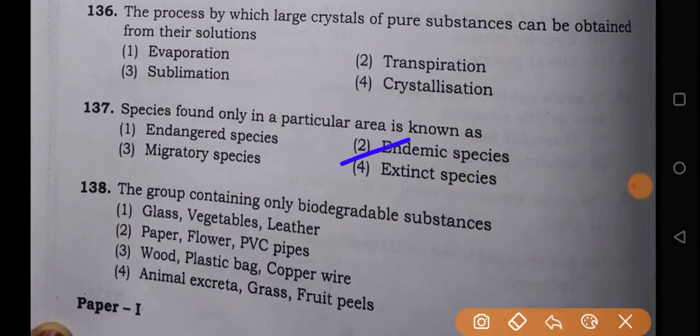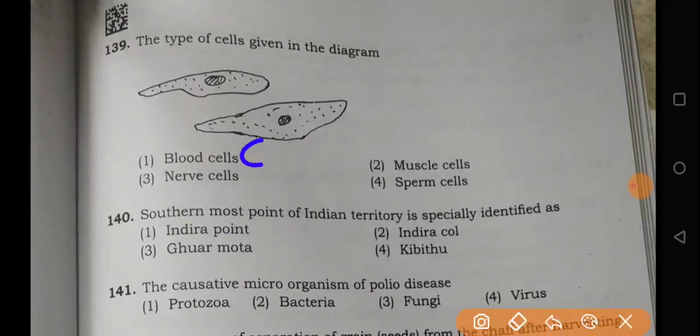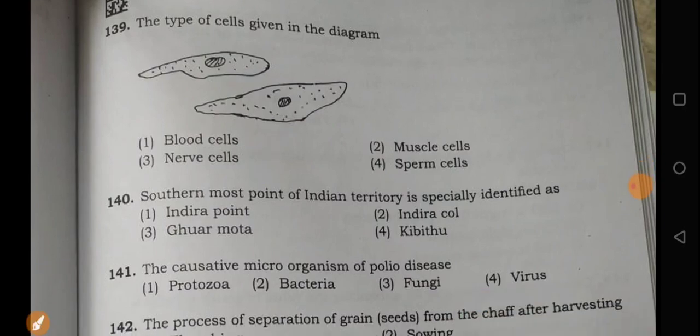Endemic species is the answer. And after that, here animal excreta, grass, and fruit peels are biodegradable substances. Similarly here, round shaped blood cells - for elongated narrow cells, muscle cells are the correct one.